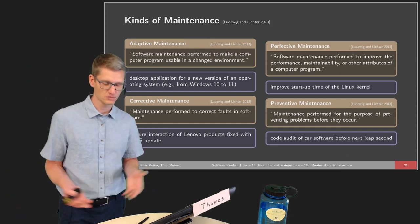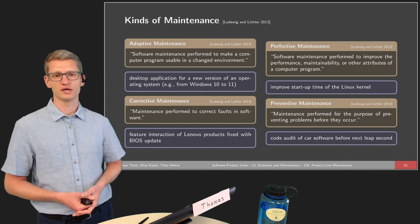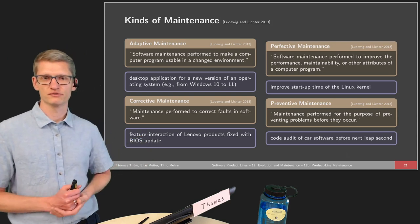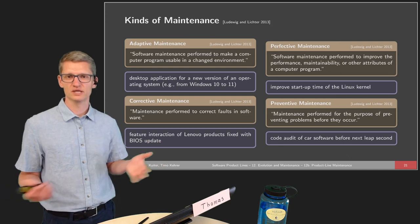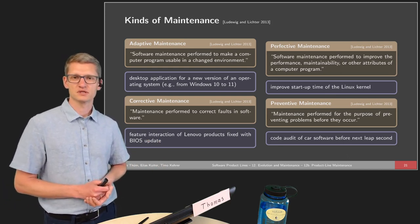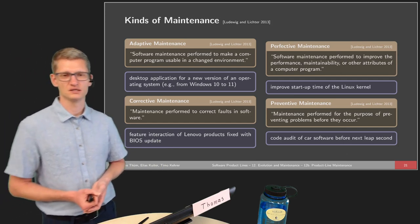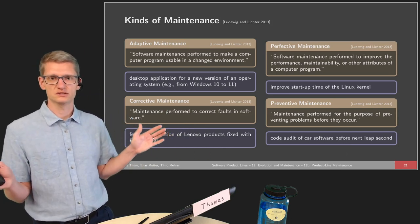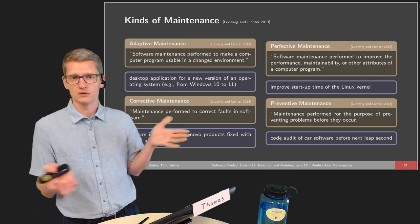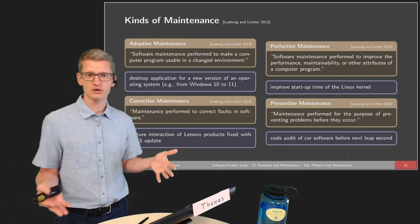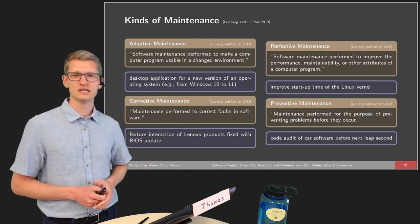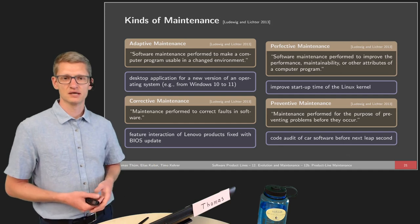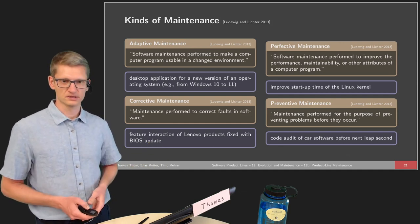Finally, preventive maintenance: maintenance performed to prevent problems before they occur. A famous example is that of leap seconds — there has been no leap second since December 31st, 2016. When the next one occurs, many software systems may have problems. For example, conducting a code audit of car software whenever the next leap second is announced, to find and fix potential issues and avoid crashes or other dysfunctionality.